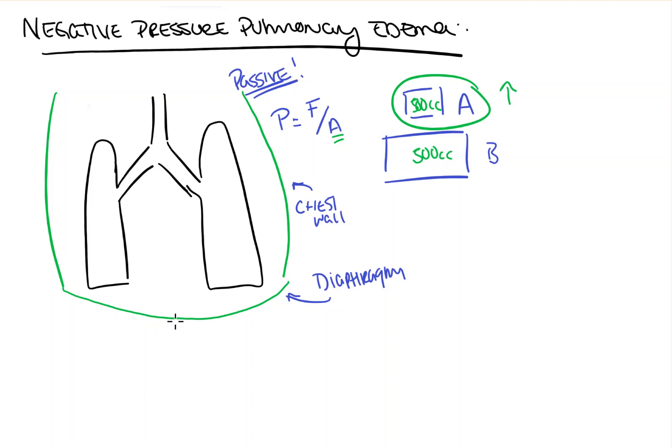Now, when you take a deep breath, your diaphragm contracts, and it moves inferiorly, from position A down to position B. So, in our pressure equals force over area equation, we are increasing our area, thus decreasing our intrathoracic pressure.